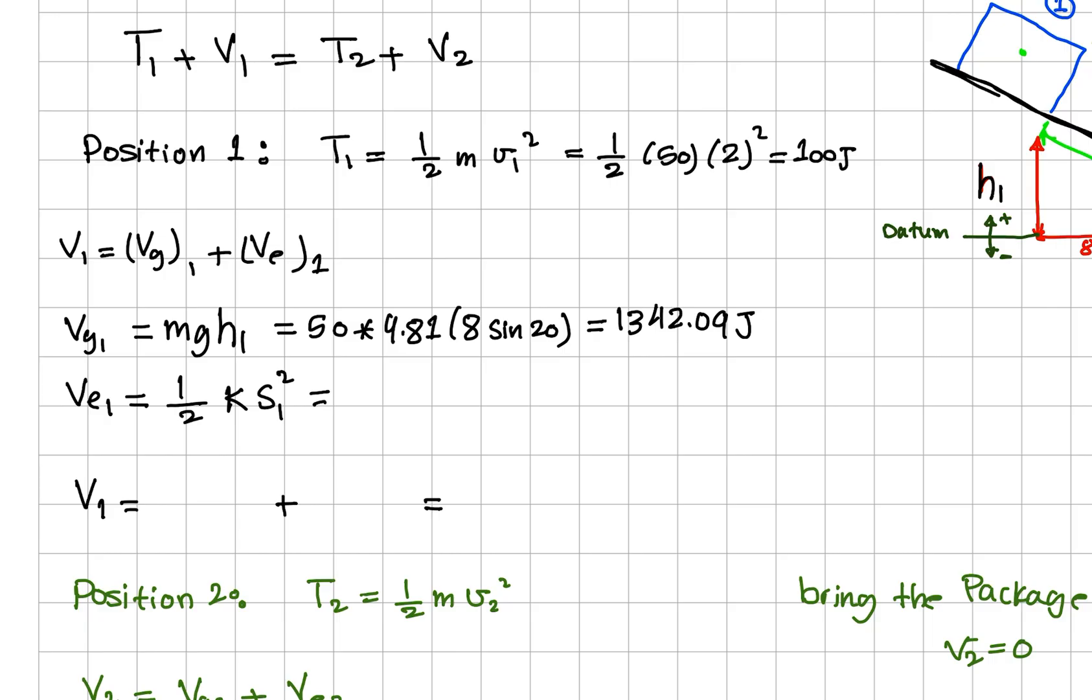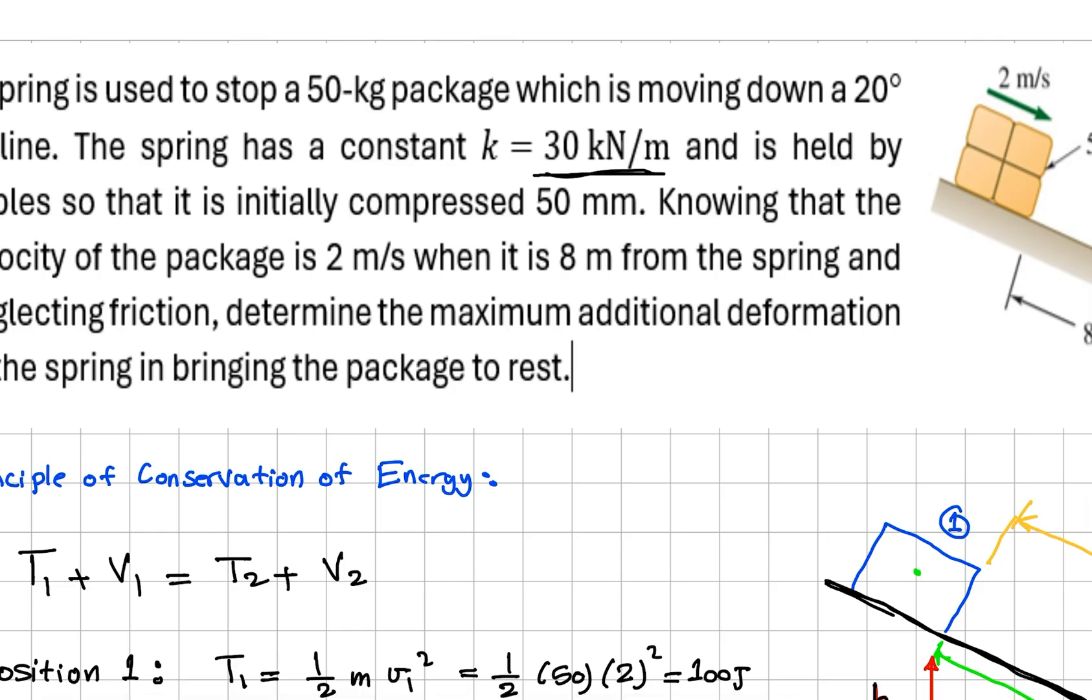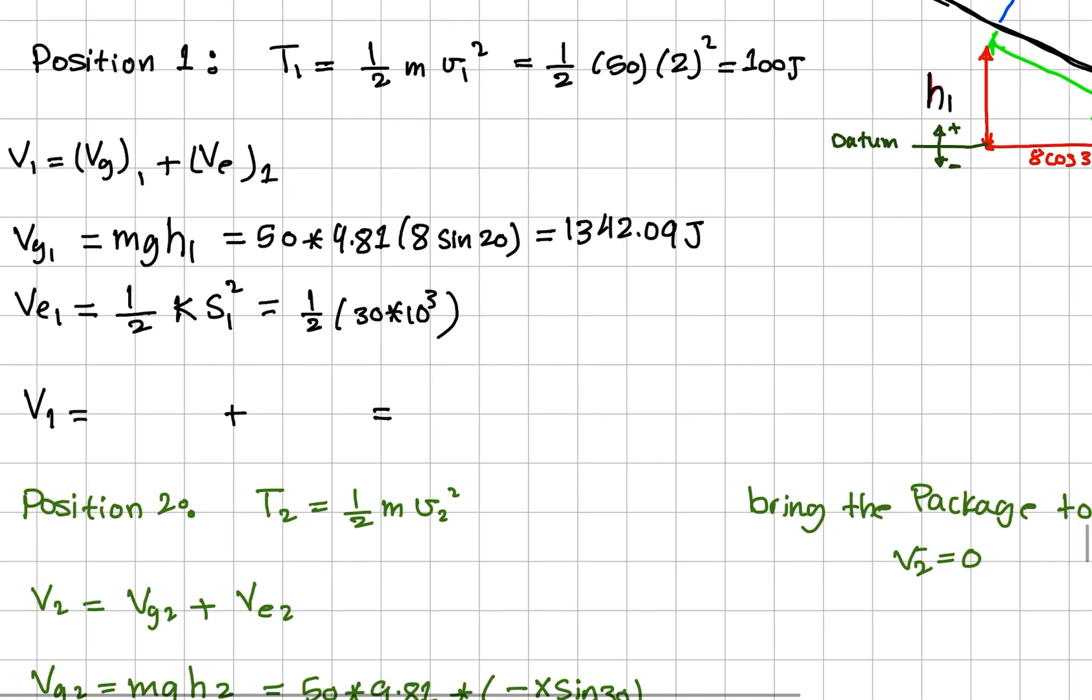The same thing for position 1, when we calculate the spring energy, which is half K s1². And the s1 here equals 0.05 meters because it's already compressed by 50 millimeters. This is 30 times 10³, because it is kilonewtons here, the K converted to newtons, times 0.05 squared.